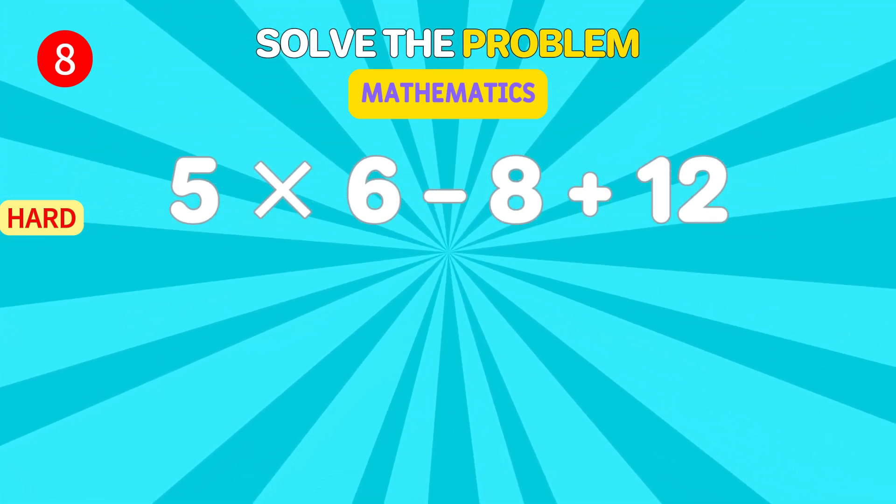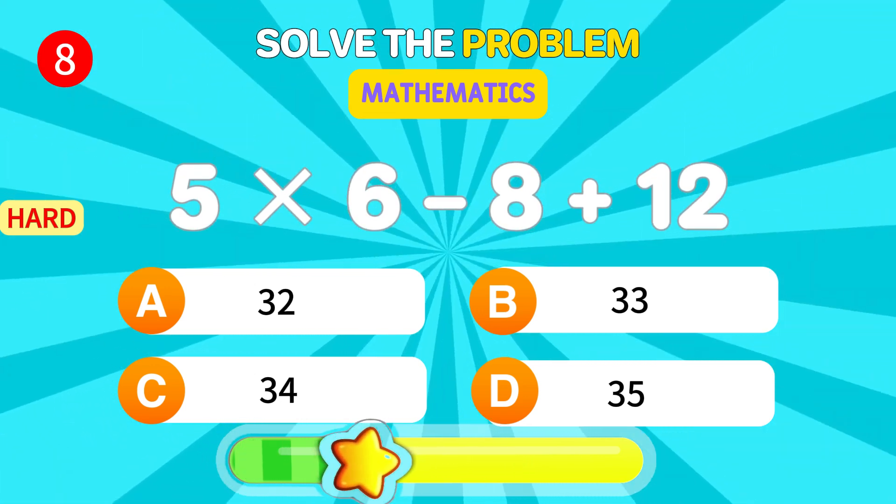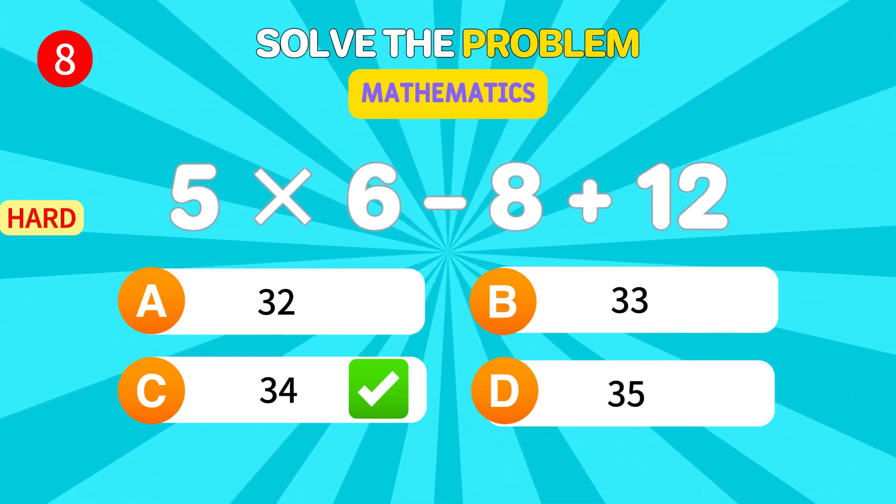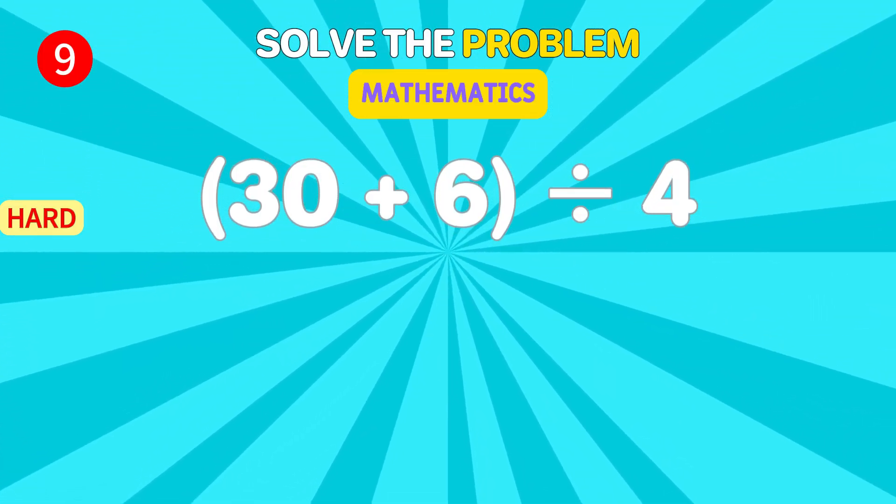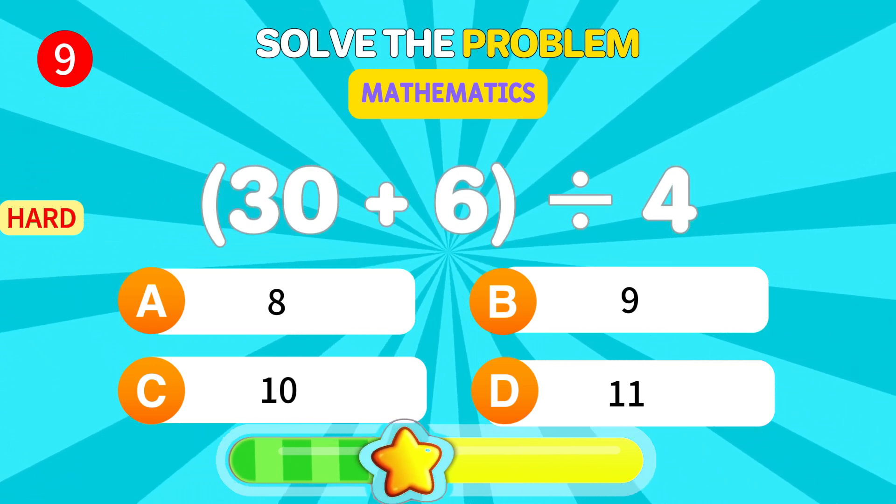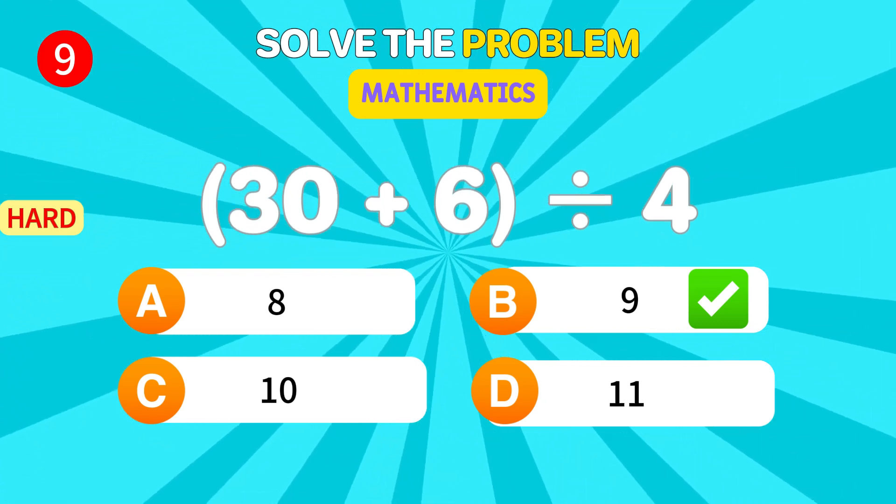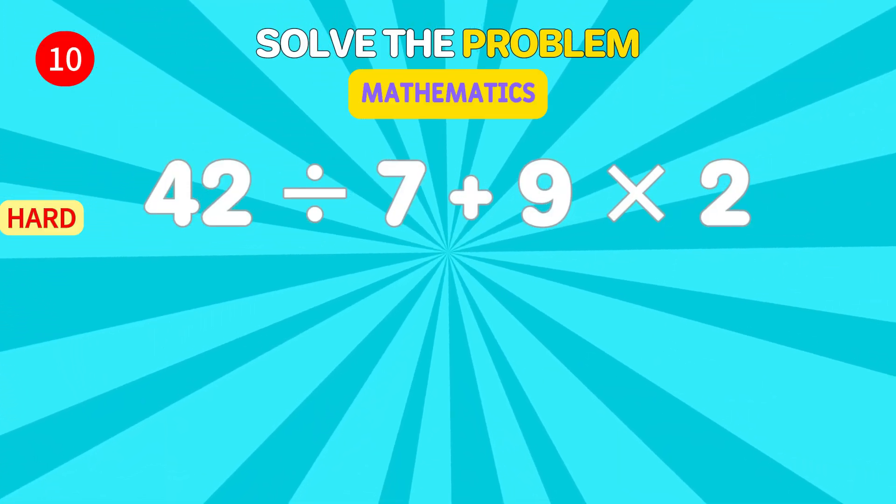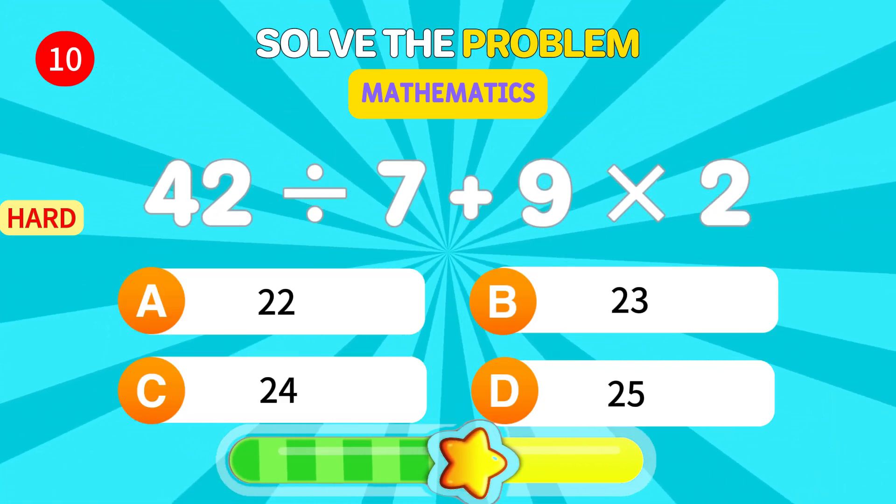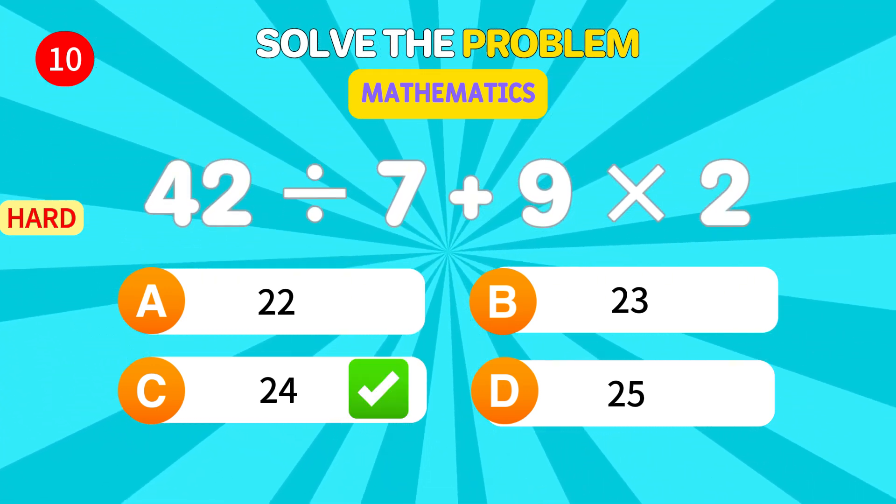What's 5 times 6 minus 8 plus 12? 34. Incredible. Add 30 and 6, then divide by 4. 9. Fantastic. Solve this. 42 divided by 7 times 2. 24. Amazing effort.